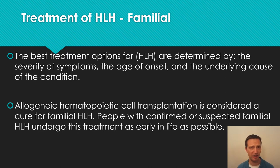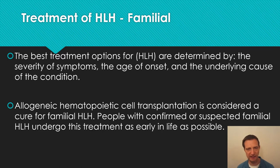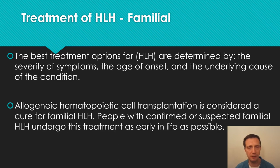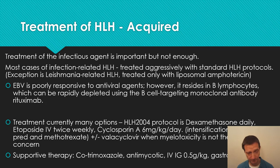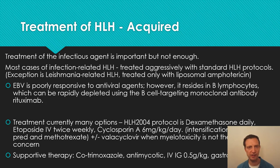In terms of treatment, if you have an inherited type of HLH the onset will be very young, and to be honest the only real treatment is hematopoietic cell transplantation, which is considered a cure for familial HLH. This treatment should be done as early as possible, though the treatment itself is pretty intensive. For the acquired form, you really need to identify the infectious agent and treat it as aggressively and quickly as possible.